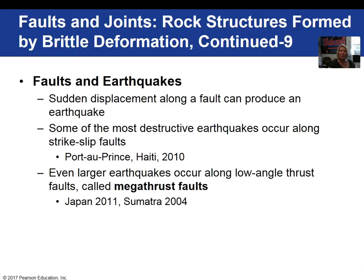When fault blocks move, large earthquakes can be generated. Some very large earthquakes related to strike-slip faults have occurred in the recent past — Haiti in 2010, for example. Even larger earthquakes are associated with subduction zones, what we call megathrust faults. Japan in 2011 generated a large tsunami, and Sumatra in 2004 also generated a very large tsunami, killing a couple hundred thousand people.